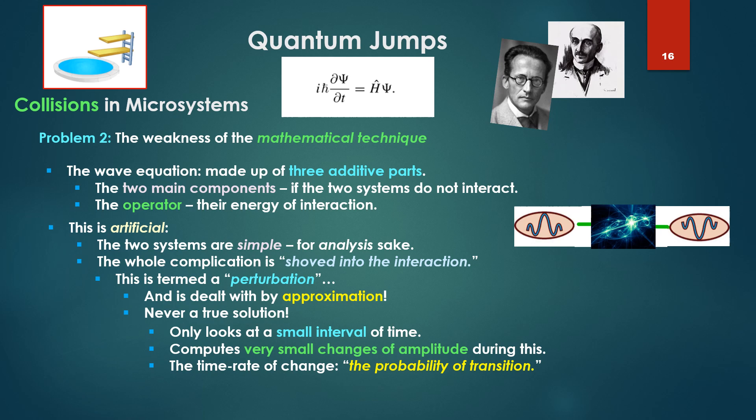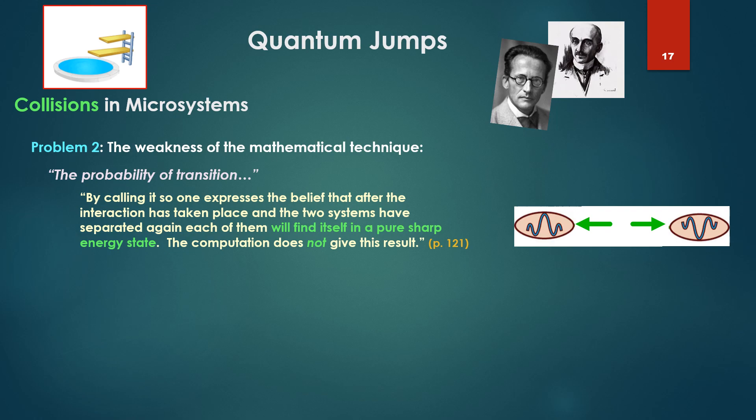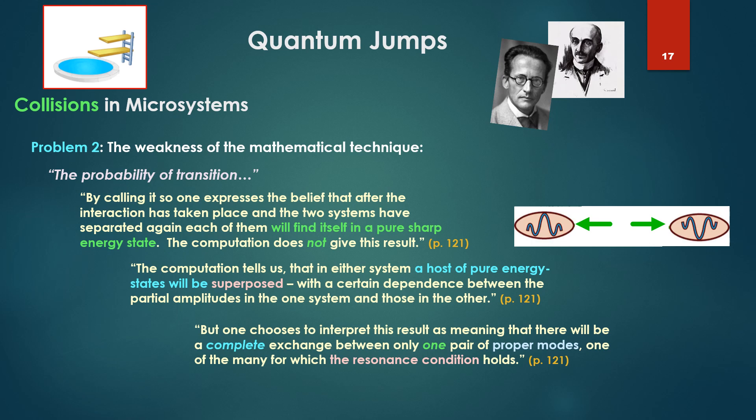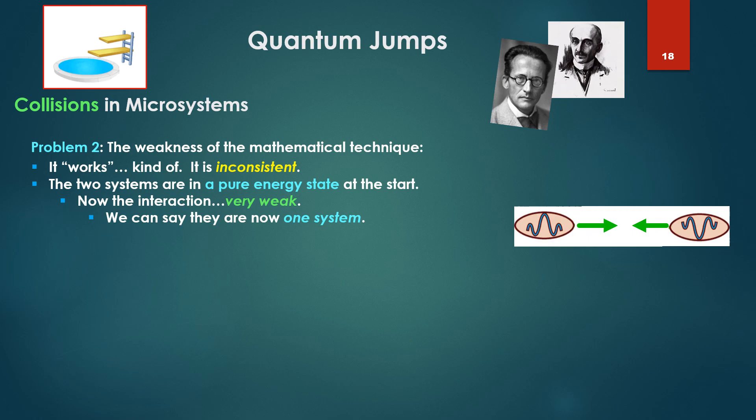The probability of transition: by calling it so one expresses the belief that after the interaction has taken place, and the two systems have separated again, each of them will find itself in a pure, sharp energy state. The computation does not give this result. The computation tells us that in either system, a host of pure energy states will be superposed, with a certain dependence between the partial amplitudes in the one system and those in the other. But one chooses to interpret this result as meaning that there will be a complete exchange between only one pair of proper modes, one of the many for which the resonance condition holds. This works, kind of. It is inconsistent.